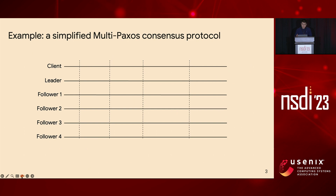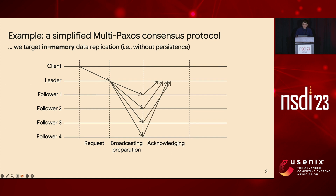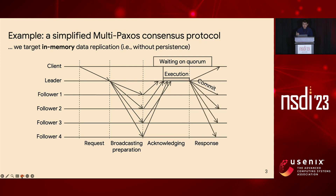Here we show an example of a simplified MultiPaxos consensus protocol with five replicas in failure-free cases. We target in-memory data replication on these five machines. In MultiPaxos, there will be one leader and four followers. The client sends a request to the leader, and the leader will first broadcast the preparation messages to all followers. Each follower will log the preparation message and send an ACK message back. Once the leader receives enough ACKs — the so-called write-done quorum — it can stop processing the client request and finally commit the message and respond back to the client.